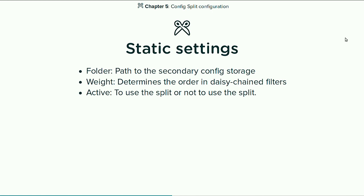Let's go through the different options to configure configuration split. There are three field sets. The first part is the static settings, where you specify the folder — the directory of the secondary configuration storage. You can use an absolute path or a relative path to the Drupal root, the same way you configure the sync storage in settings.php. If you leave it empty, it will use a separate specialized database storage for this split. You can have multiple splits, and they get applied one after the other depending on weight. The split can be active or not, and all of these settings you can override in settings.php using the normal configuration override mechanism.